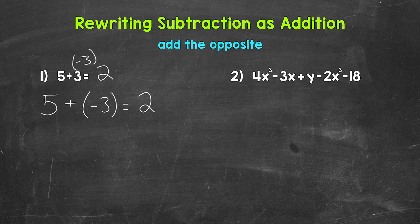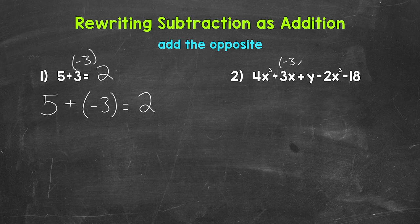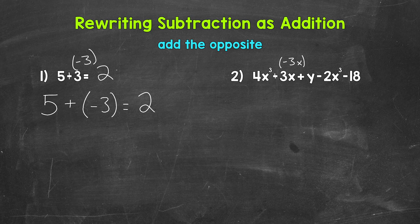Let's start with the subtraction of a positive 3x. So add, and then the opposite of positive 3x is negative 3x. So adding negative 3x is the same as subtracting a positive 3x.